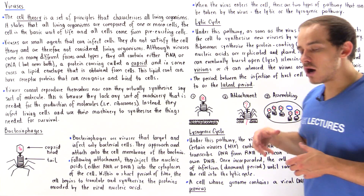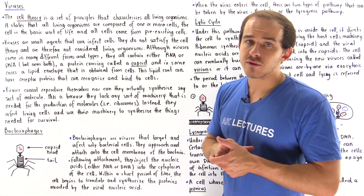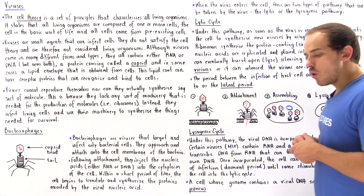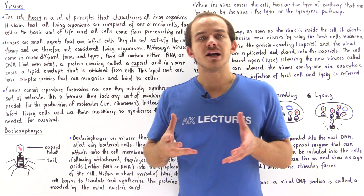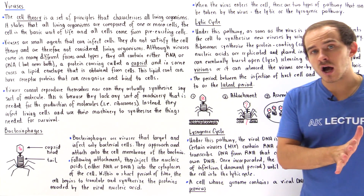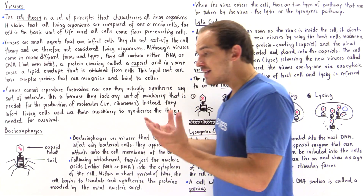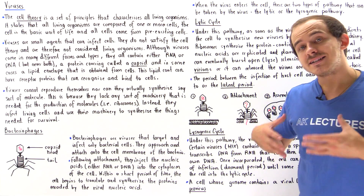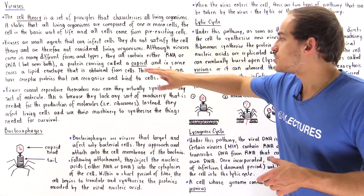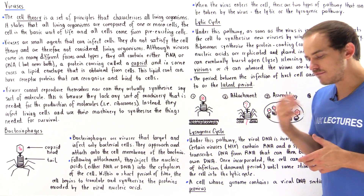Viruses also contain a protein covering found outside the nucleic acid, known as a capsid. Some viruses also contain another covering made of lipids, known as the lipid envelope, which actually comes from other living cells. The lipid envelope not only protects the virus but also serves as an attachment mechanism, allowing the virus to attach onto living cells via receptor proteins.